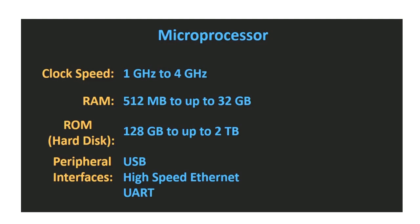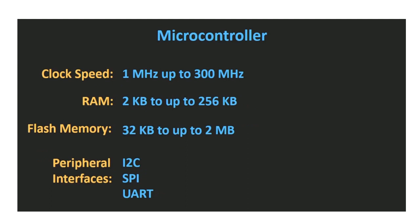In the case of a microcontroller, the clock speed is in the range of megahertz — from 1 MHz up to 300 MHz in high-end microcontrollers. Since microcontrollers are designed for specific tasks, the memory required is much less. RAM inside a microcontroller ranges from 2 KB to 256 KB, and flash or program memory varies from 32 KB to 2 MB. Common peripheral interfaces found inside a microcontroller include I2C and other serial interfaces.